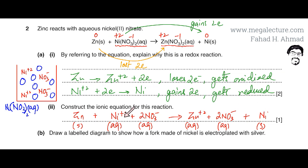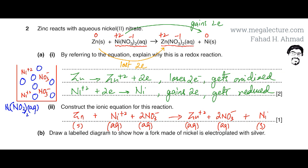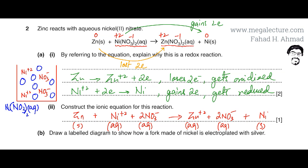Only aqueous substances are written in dissociated form. Now we need to find spectator ions — ions that did not undergo any change. Zinc changed from neutral to plus two; nickel changed from plus two to solid neutral. But nitrate, NO₃⁻, appears unchanged in aqueous state on both sides, so nitrate ions are spectator ions — they take no part in the reaction.